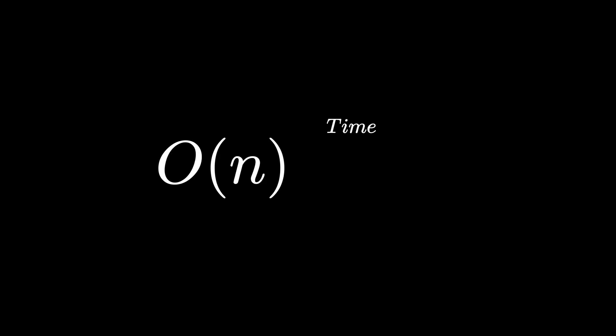SAM can be constructed in linear complexity, both time and space. We choose the method of addition. Every time we add a character at the end of the string, the new node will have a set of substrings.